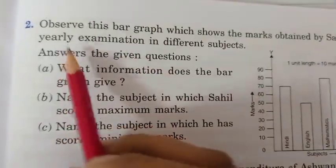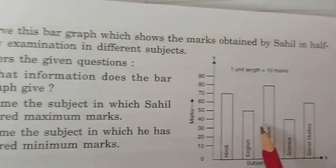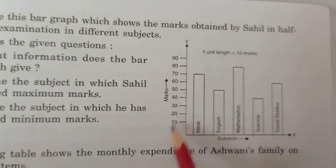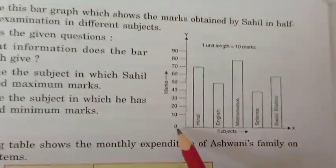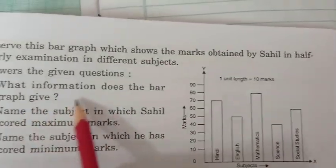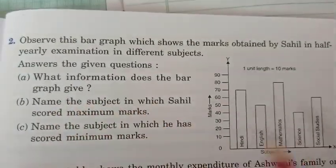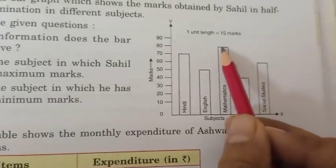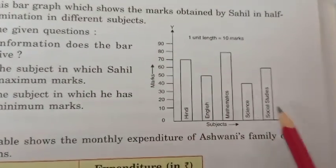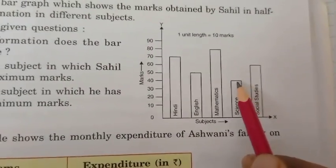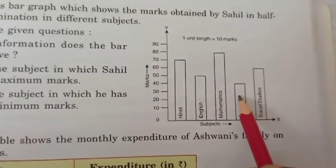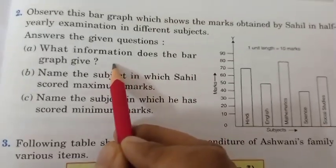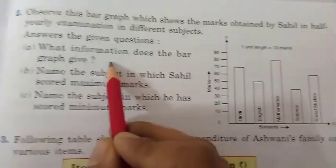Second question: this bar graph shows the marks obtained by Sahil in his half-yearly examination in different subjects. One unit is equal to 10 marks — that is the scale. What information does the bar graph give? You can write: the bar graph shows that he got the highest marks in Mathematics, or he got the least marks in Science.